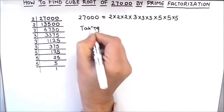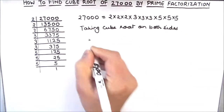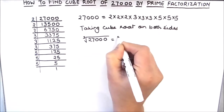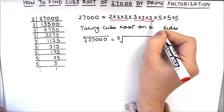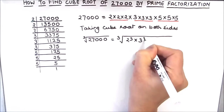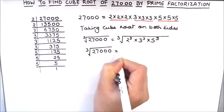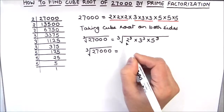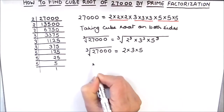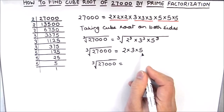As we are finding the cube root, we are going to take the cube root on both sides. So the cube root of 27000 is equal to the cube root of 2³ × 3³ × 5³. On the right hand side, as all these numbers are perfect cubes, the cube root of a cubic number is the number itself, so all these numbers come out of the cube root sign. So the cube root of 27000 is 2 × 3 × 5, which is 2 times 3 is 6, and 6 times 5 is 30.